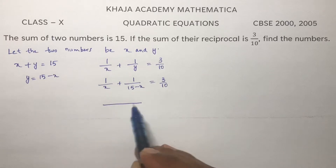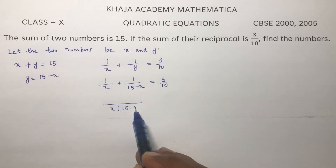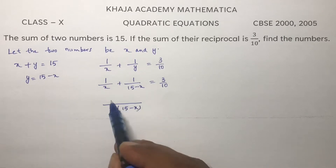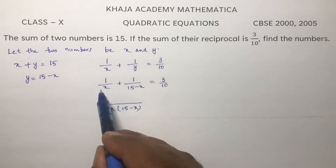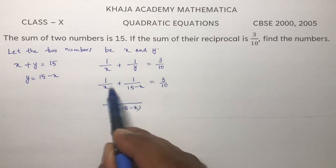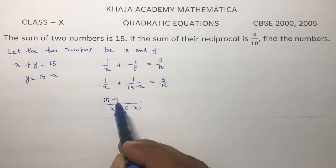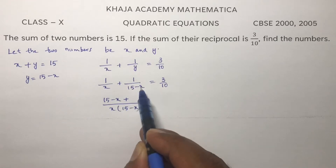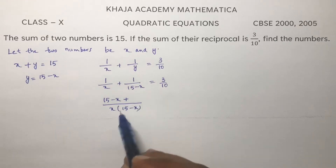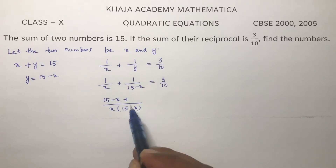If we take LCM, that is x into 15 minus x. Here we have x, so multiply 15 minus x. In the denominator here we have 15 minus x and the LCM is x into 15 minus x.